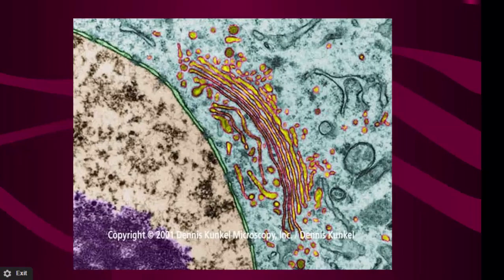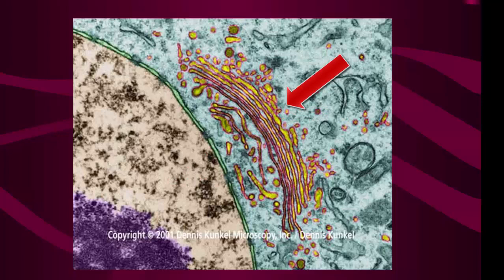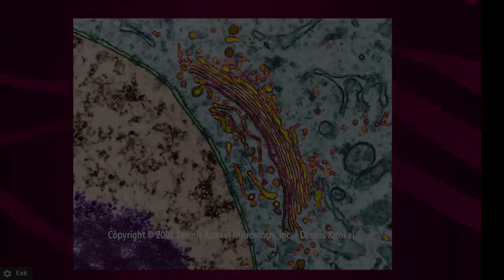You can see this process in the diagram — on the left side, vesicles are going into the Golgi complex, and on the right side, they're coming out. Those little round green circles are vesicles that would head to the outside of the cell and dump their contents outside.